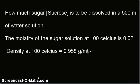How much sugar, i.e. sucrose, is to be dissolved in a 500 ml of water solution? The molality of the sugar solution at 100°C is 0.02. Density at 100°C is 0.958 g/ml.